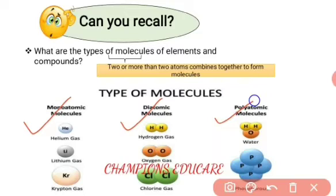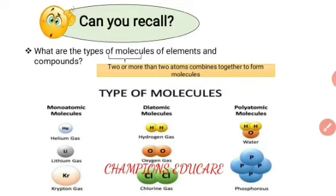The molecule which is formed from two atoms is called a diatomic molecule. Examples are hydrogen gas, oxygen, and chlorine. The molecule which is formed from many atoms is called a polyatomic molecule. Examples given are water and phosphorus.